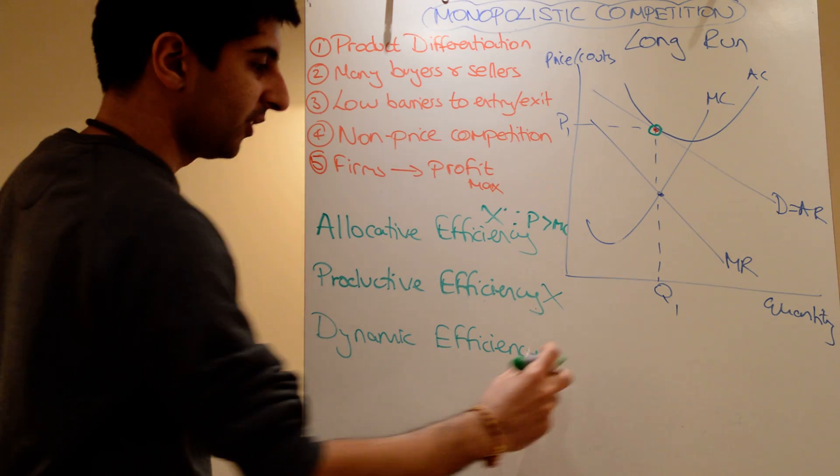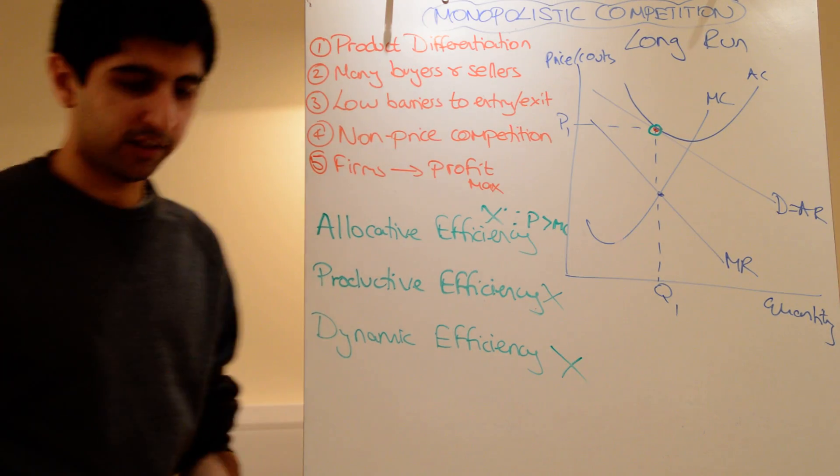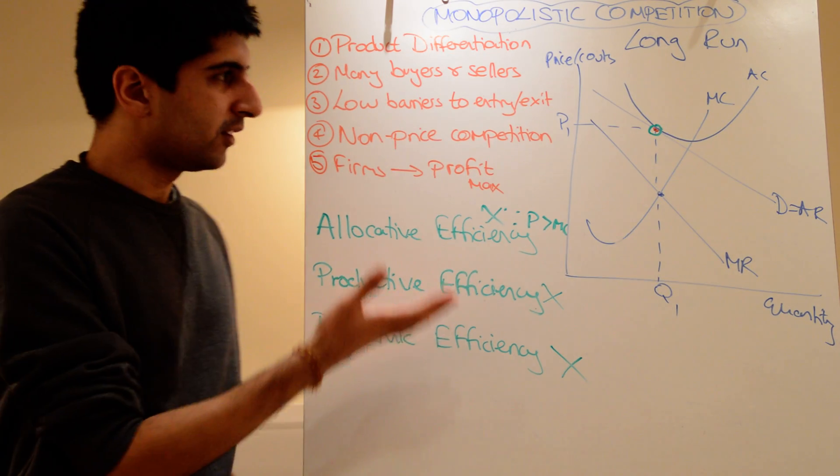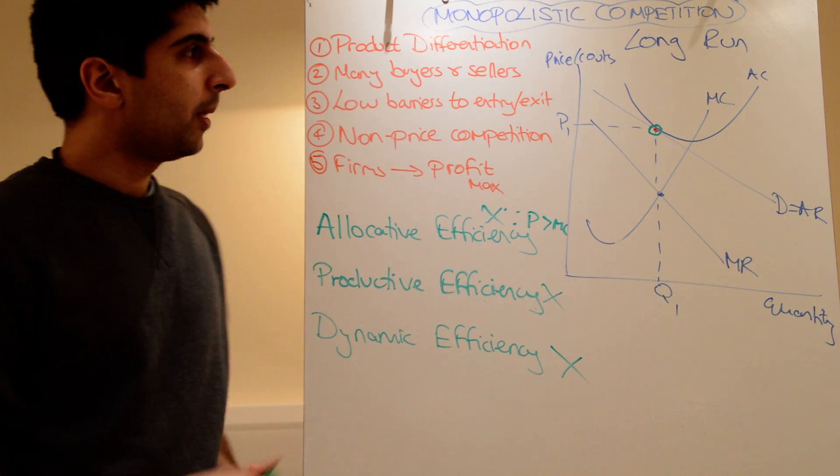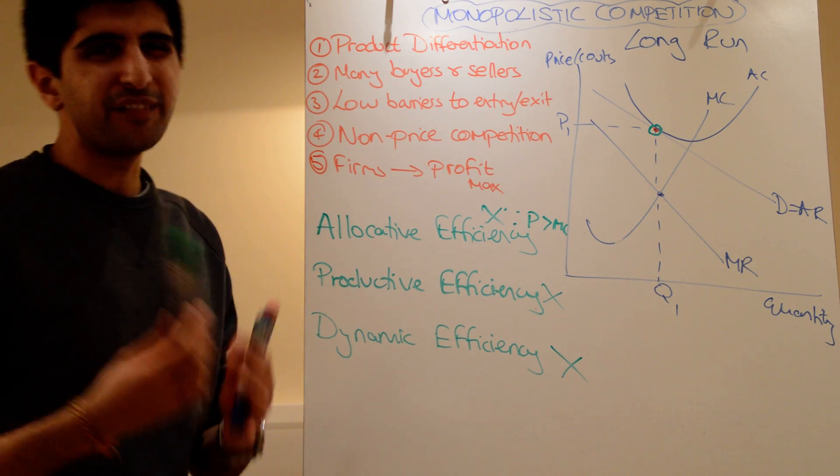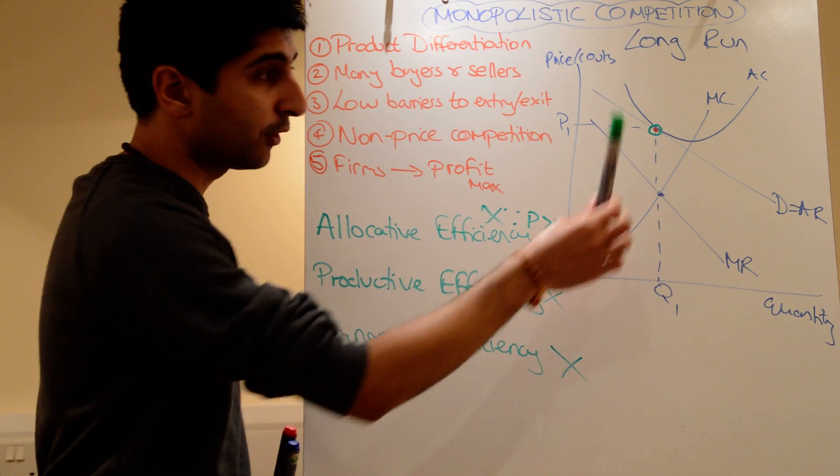So in terms of dynamic efficiency, you could say, not really either. So in that sense, not very good in terms of efficiency gains there. But that is monopolistic competition. A very simple structure, as long as you know how to draw the diagram properly.